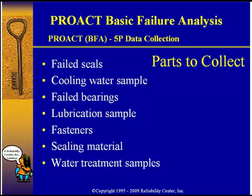For our five P's, some of the parts we want to collect: since mechanical seal failures are the number one reason, we should collect some failed seals, open them up, and inspect them. We should also look at the cooling water — a sample should be sent out for analysis, as contaminants there could cause problems. We should get some failed bearings, split them open, and examine the evidence. We should get lubrication samples and send those out. We also want to look at fasteners to ensure correct patterns, check sealing material to confirm it's right for the service being asked of it, and get water treatment samples for testing.